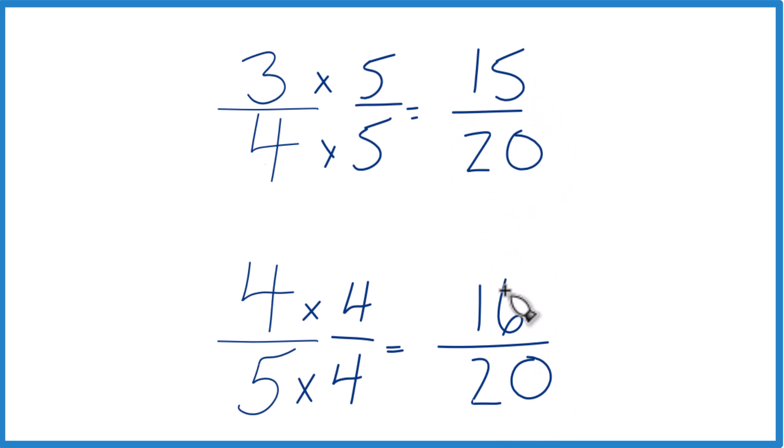And you can see that 16 is bigger than 15. So 16 twentieths, that's bigger than 15 twentieths. Only by 1 twentieths, but it's still bigger. And since these are equivalent, and these are equivalent, that means that 4 fifths, that's larger than 3 fourths.